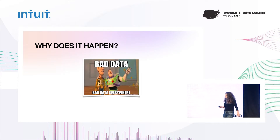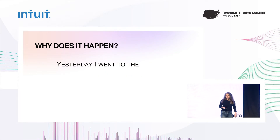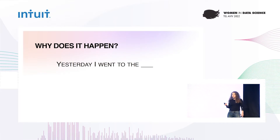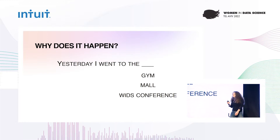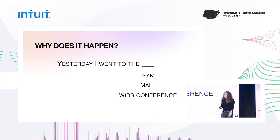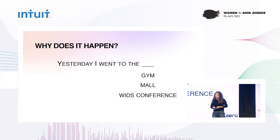Another reason has to do with the way these models are trained. Text generation models are optimized by being given a context, like 'yesterday I went to D,' and they learn to predict the next word — it can be gym, mall, or women in data science conference in our case. And this is the only thing they're optimized for: maximizing the probability of the next word. They're not explicitly optimized to avoid repetitions, to be logically consistent, or to avoid bias. So it's no wonder these issues find their way into our models.